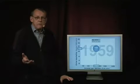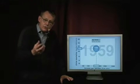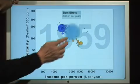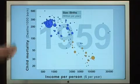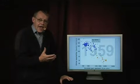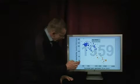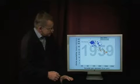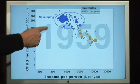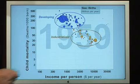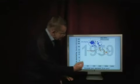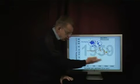But the world was obviously very unequal. I will show this by splitting the world bubble into country bubbles — each bubble is a country, and the size is the number of births. The blue ones are the developing countries, the brown ones are the industrialized countries. You can see that industrialized countries had higher income and lower child mortality.